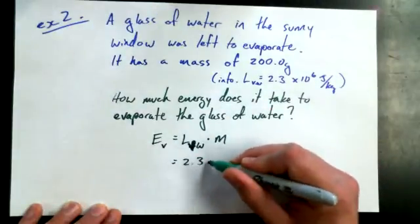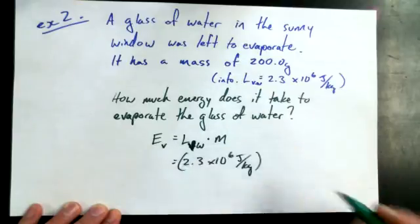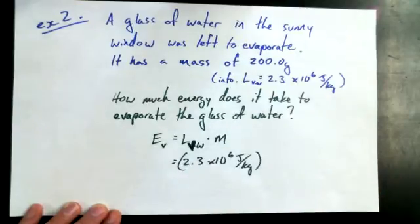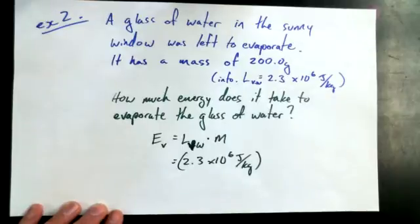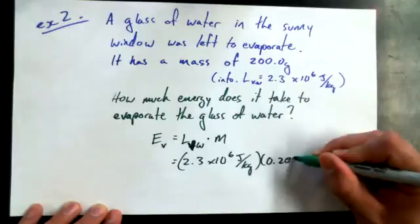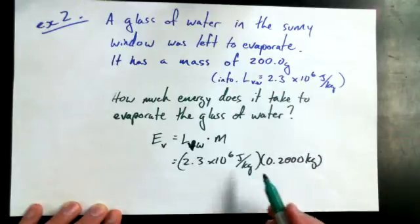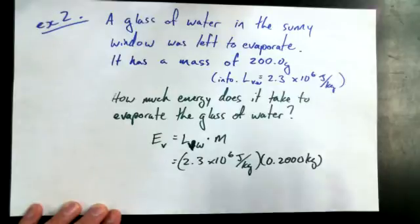2.3 times 10 to the power of 6 joules per kilogram. And is it times 200? 0.2. Oh, thank goodness. Okay. 0.2000 kilograms, because remember, we're talking about kilograms here. Joules per kilogram means your mass has got to be in kilograms. Always a good rule.